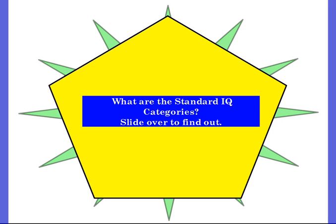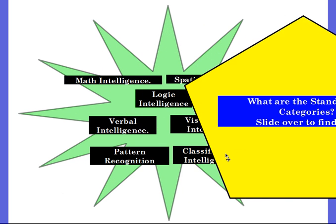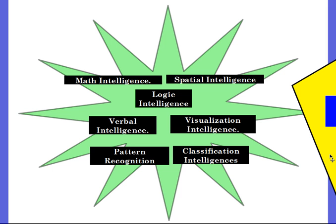First, I wanted to share the different categories of questions that are asked. Can you think of different categories that are on an IQ test? If you want to think about it longer, pause the video. I will uncover the answer right now. There are the different categories: Math, Spatial, Logic, Verbal, Visualization, Pattern, and Classification. Did you know any of those?